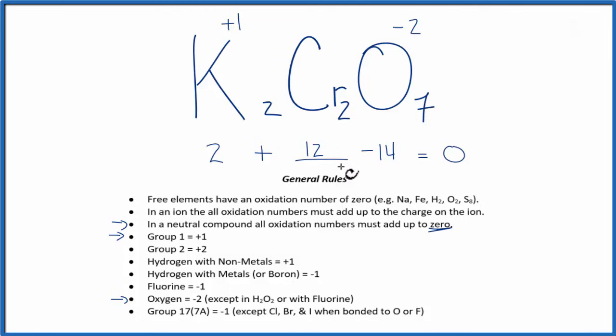So 12, that's what we need. But we have 2 chromiums, so we need to take half of that. So each chromium is going to have an oxidation number of plus 6. 2 times plus 6, that gives us our 12.